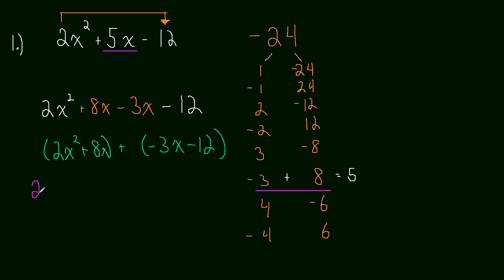So in this first group, we can actually factor out a 2x. So we have 2x times x plus 4. And if you distribute that 2x back in, you'll see those are definitely the same. And then we're adding, well, what can we factor out of this?